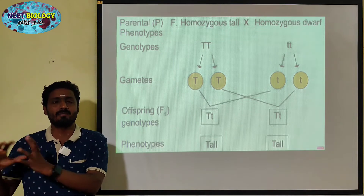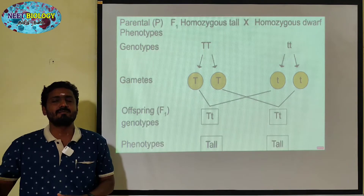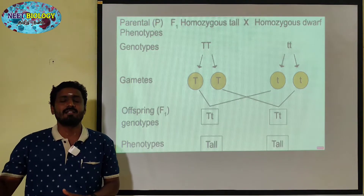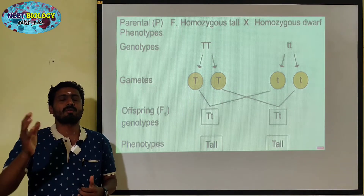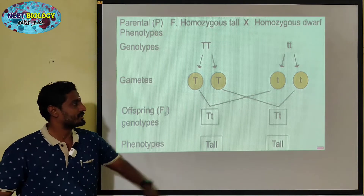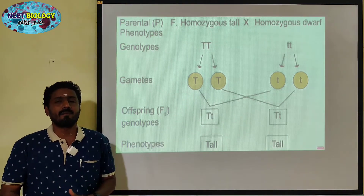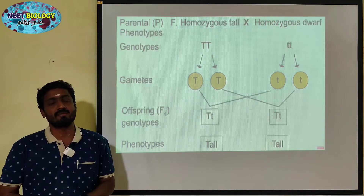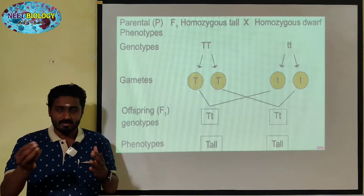The seeds are produced from the monohybrid cross. The F1 hybrid consists of the first tall plants. The tall plants undergo self-pollination, which is artificial pollination.